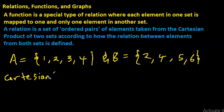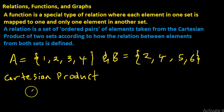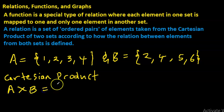Let us remind you what a Cartesian product is. The Cartesian product, written as A times B, is a set of ordered pairs. It's denoted as A multiplied by B, but the Cartesian product is really a set of ordered pairs.